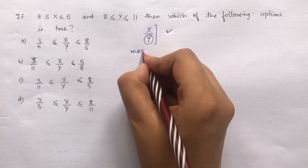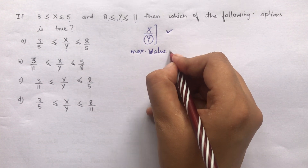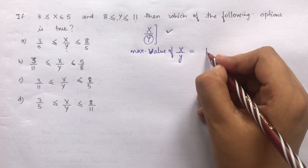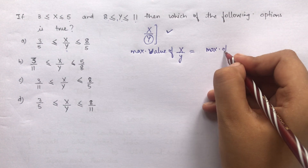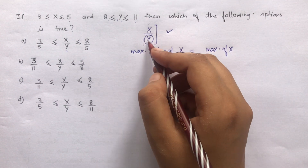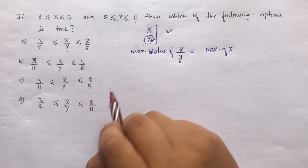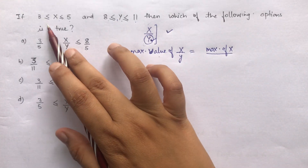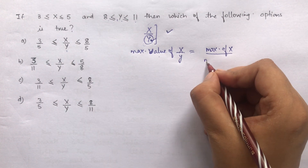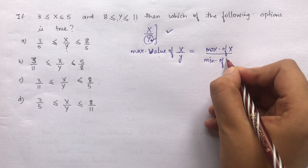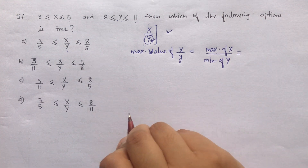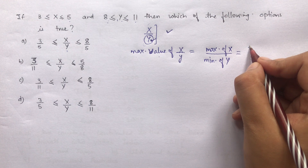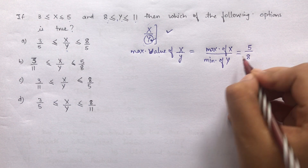So let's see the question. For maximum value of x upon y — to get maximum value of this fraction, the denominator should be small. So maximum value of x upon y = maximum value of x, which is 5, upon minimum value of y, which is 8. So maximum value of x/y is 5/8.